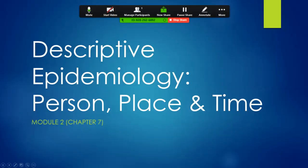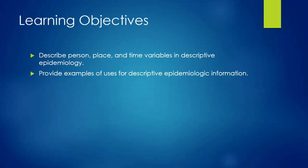In this module 2 video we'll be talking about descriptive epidemiology, which focuses on the person, place, and time characteristics and distribution of diseases. Our learning objectives are to describe the person, place, and time variables used in descriptive epidemiology and provide examples of using descriptive epidemiologic information.